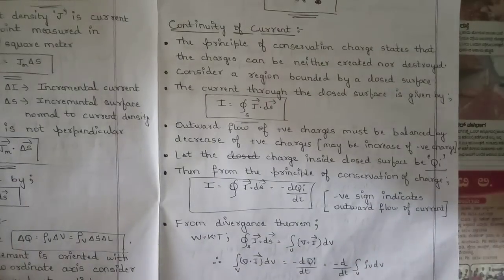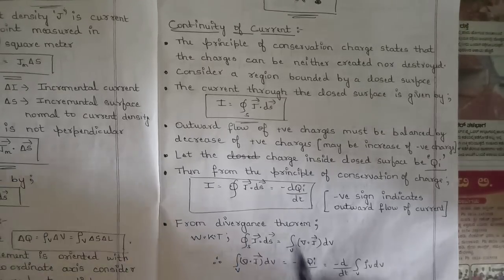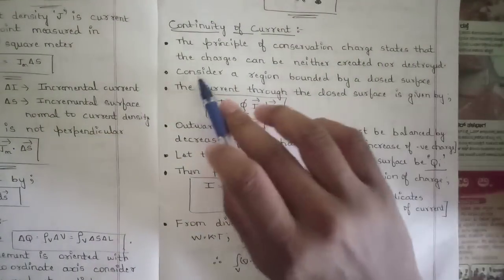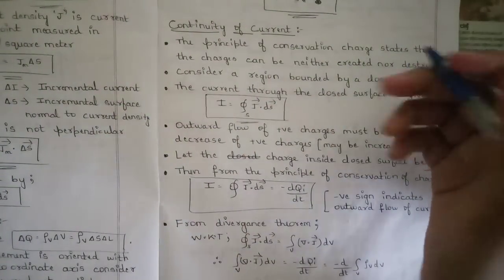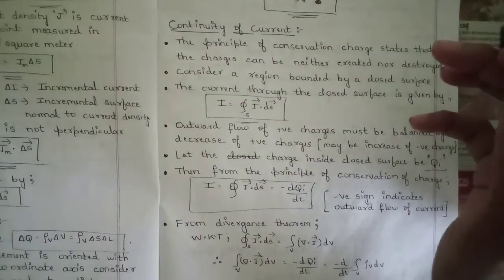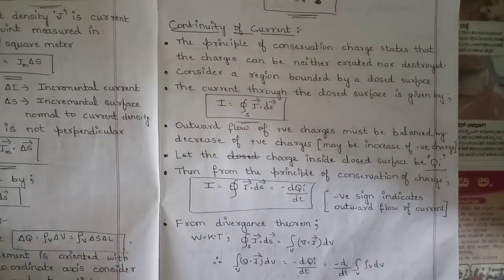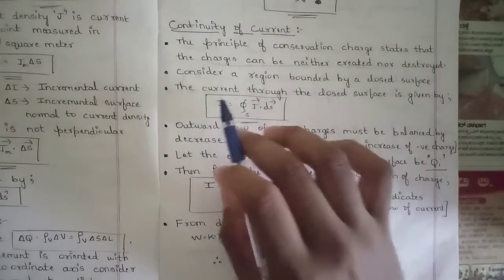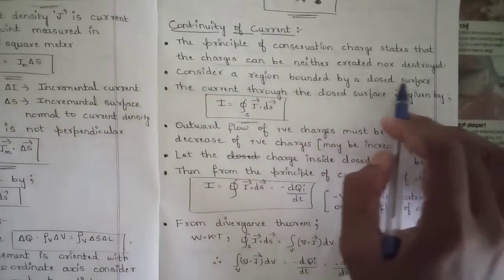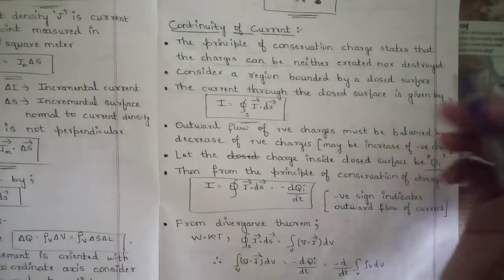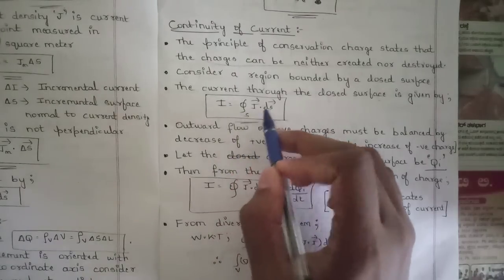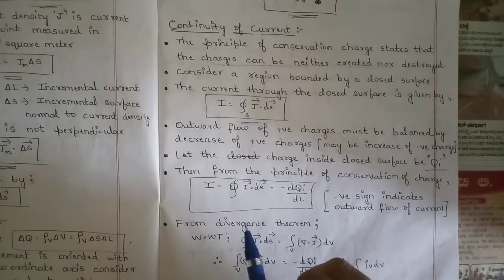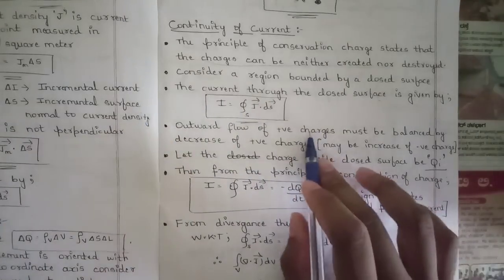The next concept is the continuity equation, also called continuity of current. The principle of conservation of charge states that charges can neither be created nor destroyed. Consider a region bounded by a closed surface; the current through it is i = ∮ J · dS, as proved in the previous derivation.